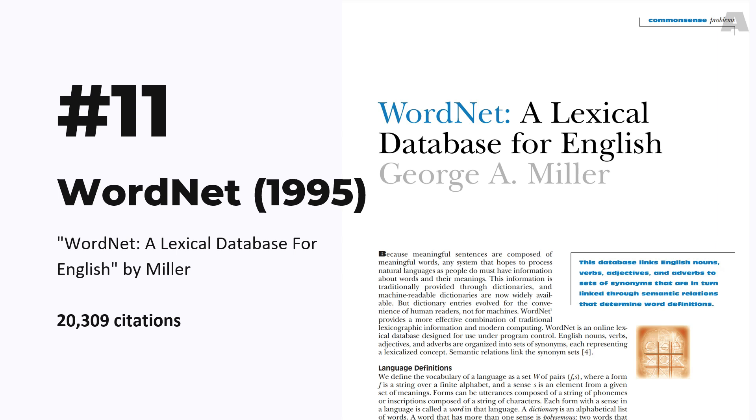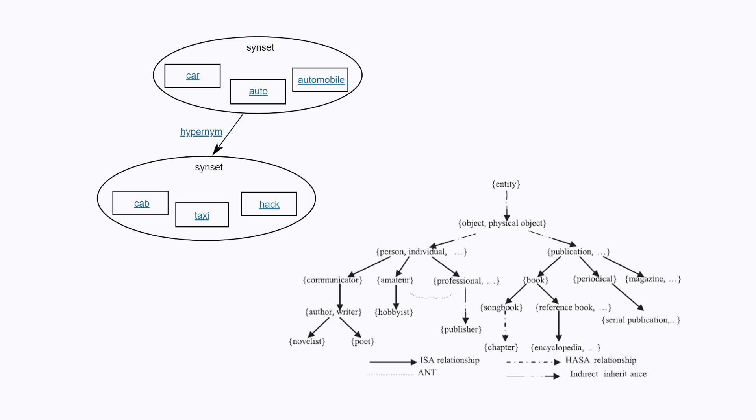Since number 10 was basically a duplicate of number eight, I will give you a bonus one. Number 11 is WordNet, a lexical database for English, and this is the oldest paper that we have seen. WordNet is not a method or architecture, but it's a database. You can think of it as a sort of dictionary that can be readable by computers. It basically categorizes all of the words in the English vocabulary that you will want a computer to understand.